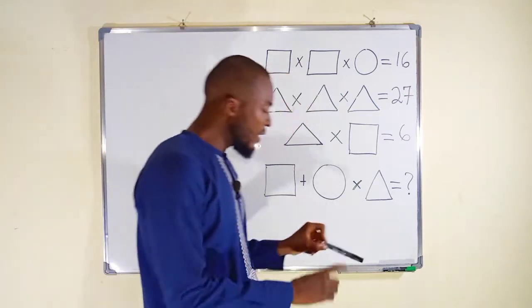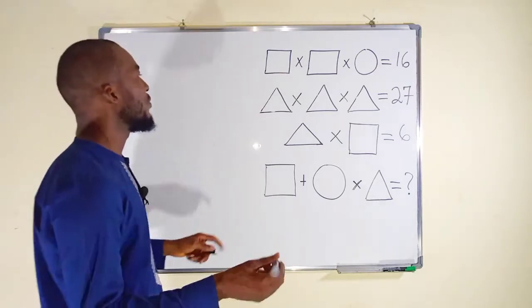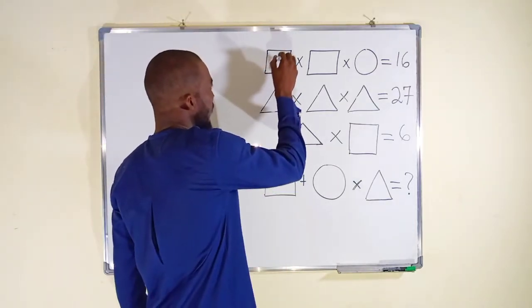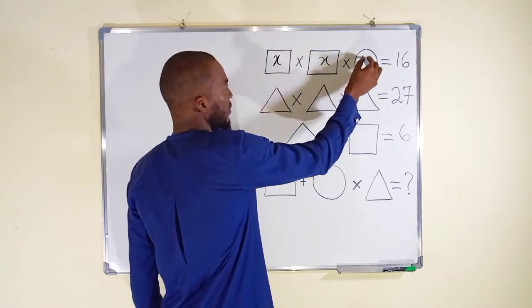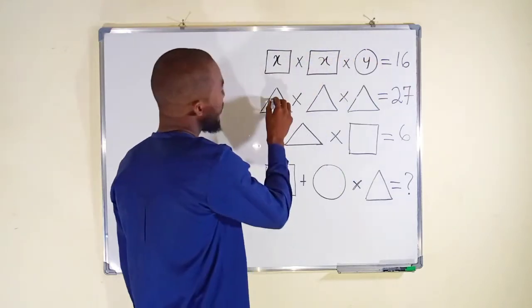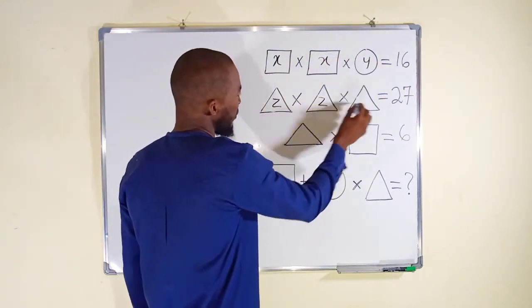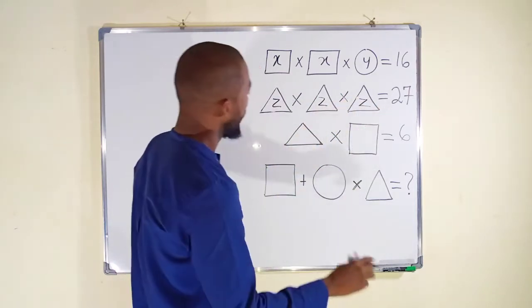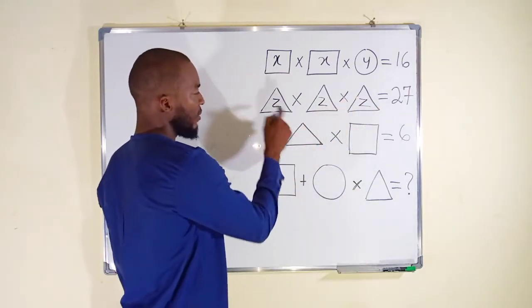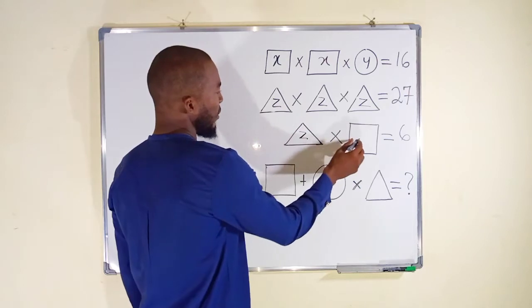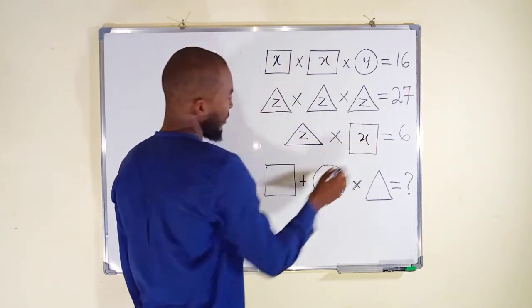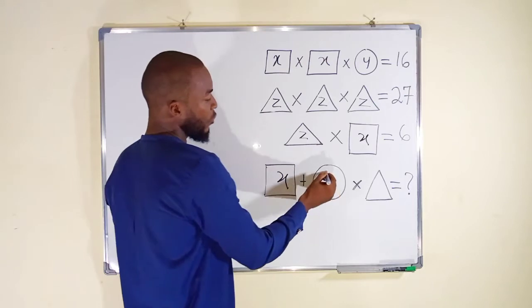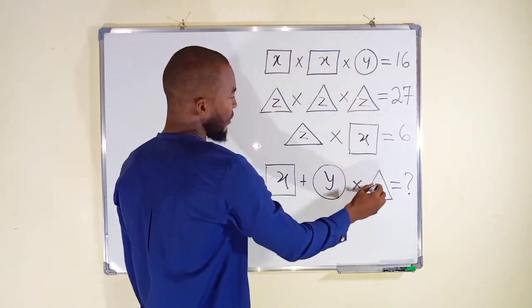So let us represent them with some variables. Let's let rectangle stand for x, so this is x. Let this one be y, let this be z, all this will be equal to z. Already this one has been declared z, this one has been declared as x.